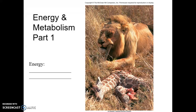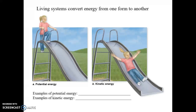When we look at energy, it typically comes in two different forms. Living systems simply convert it from one form to another. The two forms we generally see are potential and kinetic. The example here with the young girl at the top of the slide — potential energy is energy that is stored or available and ready to do something. That energy gets converted into kinetic energy, the energy of activation. As she's zooming down that slide, that is kinetic energy, energy of motion.